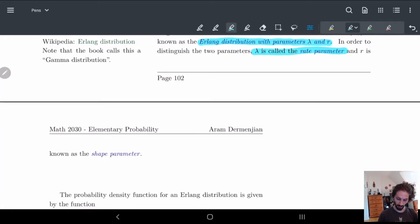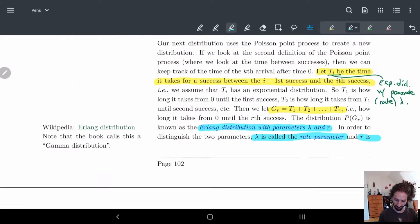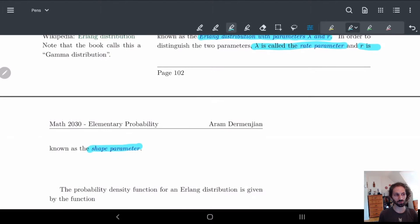And then r is known as the shape parameter, which I wish they would call s instead of r. But you know, there's just r. That's apparently the standard number. So we'll just, sometimes we'll use s instead of r.